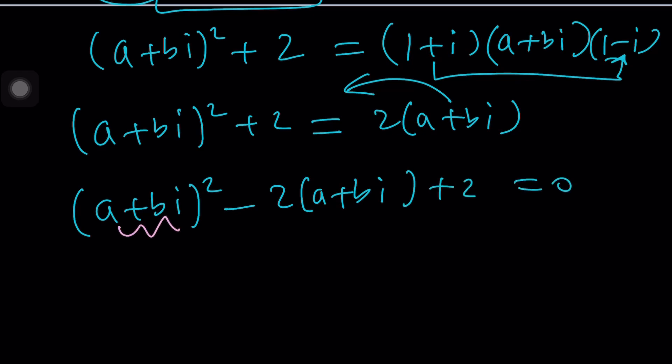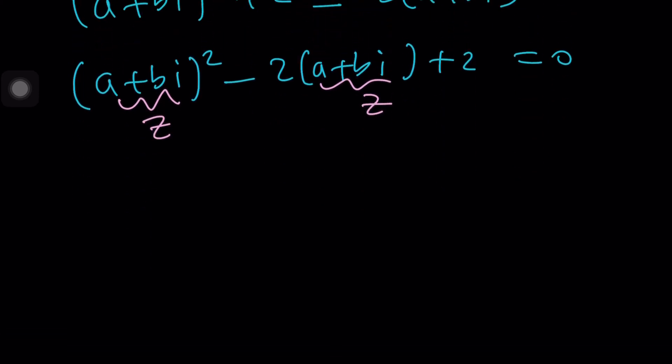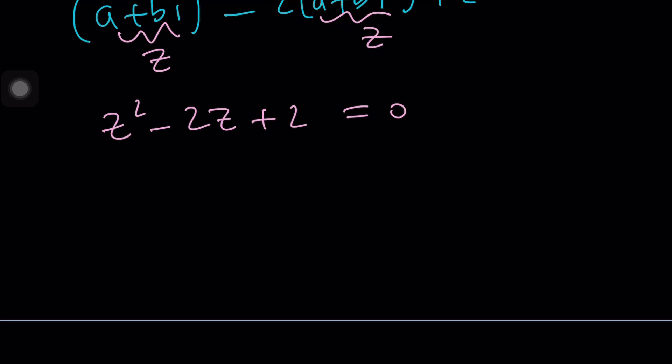We replaced z with a plus bi. Now we're replacing a plus bi with z because they are interchangeable. By the way, I was not expecting this, but that's okay. It just came up all of a sudden and I think this is a good opportunity to talk about some interesting things. This is a quadratic equation which has no real solutions. Are you surprised?